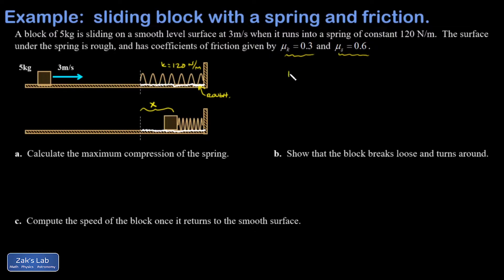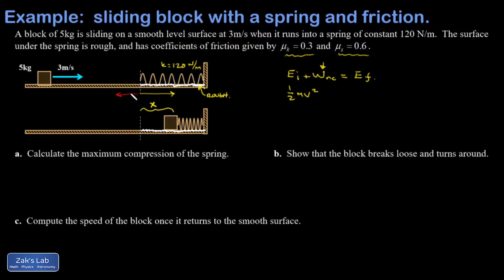Let's go ahead and write down our conservation of energy equation. I have a term for a non-conservative force doing work — that's friction doing negative work and reducing the total amount of energy. In the initial state, the spring was relaxed, so all the energy is the kinetic energy of this mass: one-half mv squared. Friction acts along this stretch in the opposite direction of motion, so I get a negative sign on that term.